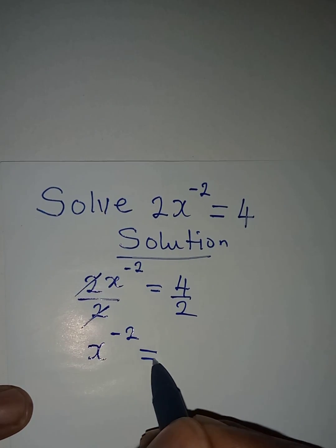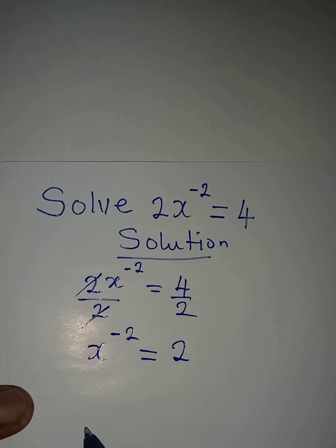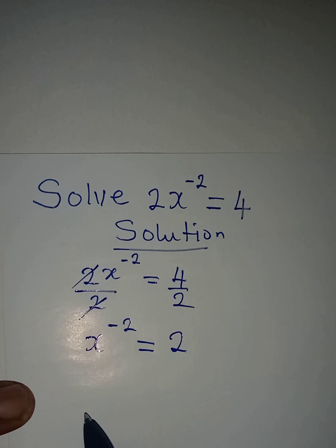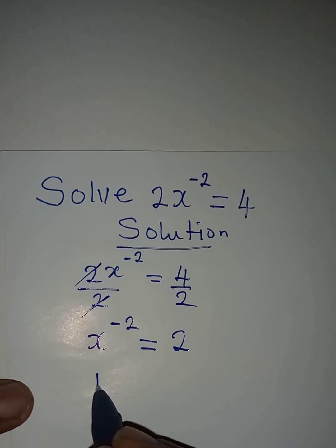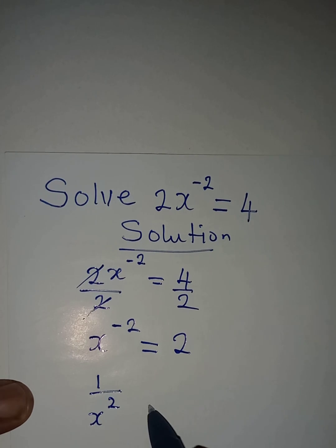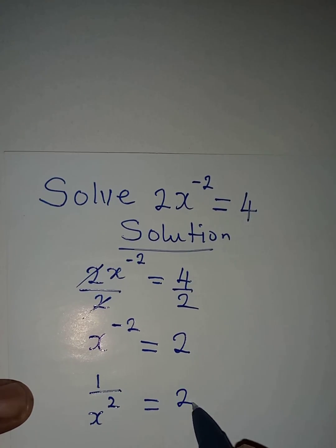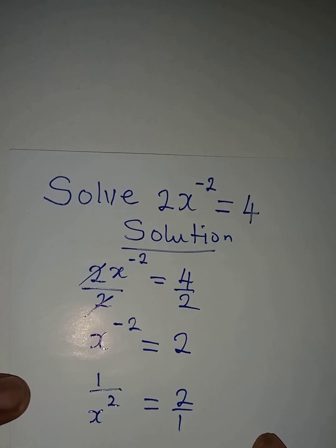And then from here we understand that this is the same thing as 1 over x squared, and it will be equal to 2. These two can be over 1 as well.